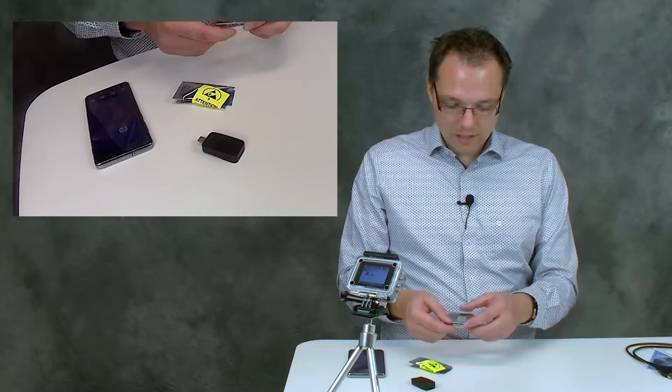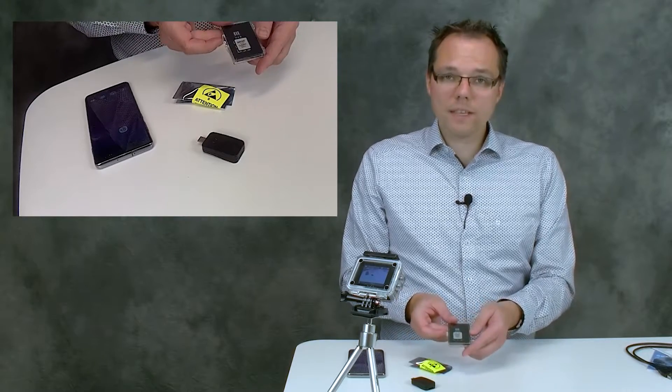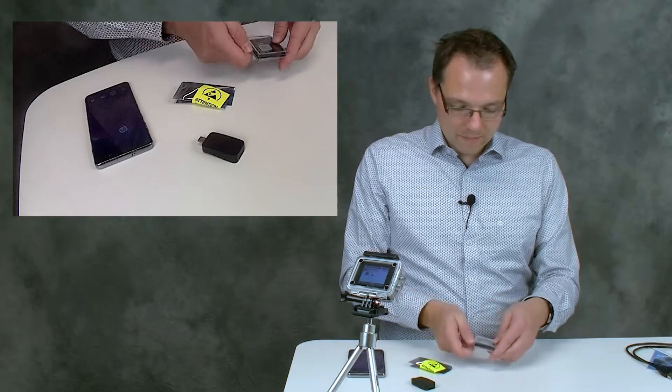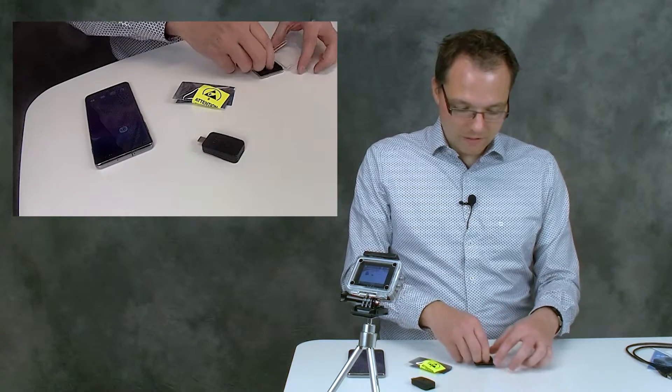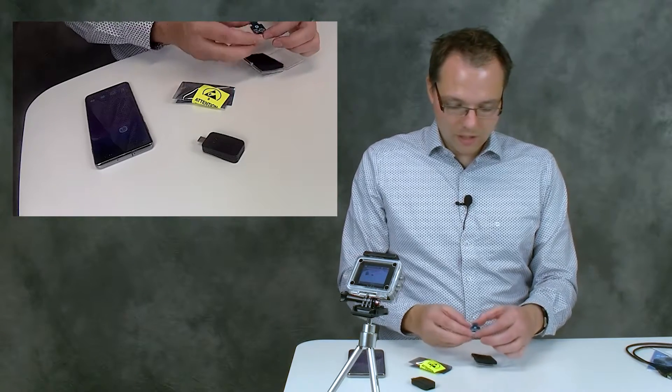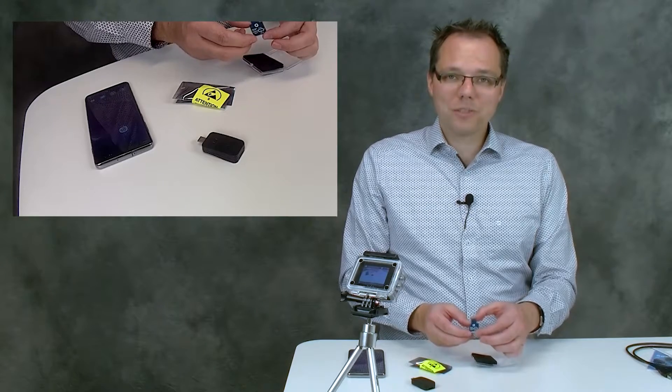Then we have here the dummy cell that we're going to use today. If you turn the dummy cell around, you can also see what's actually in there, and it's a Randall circuit.